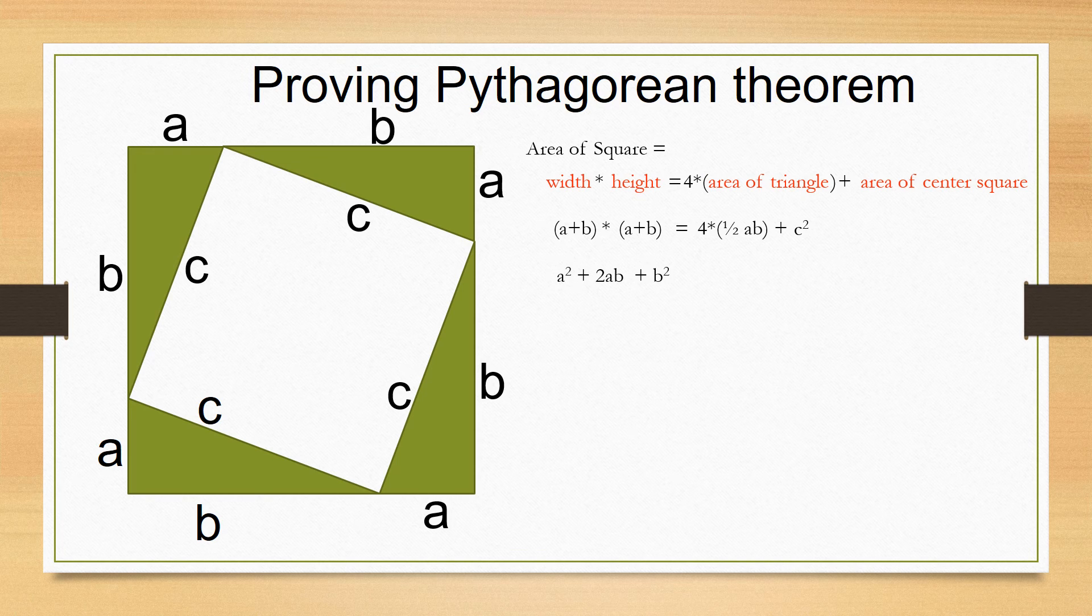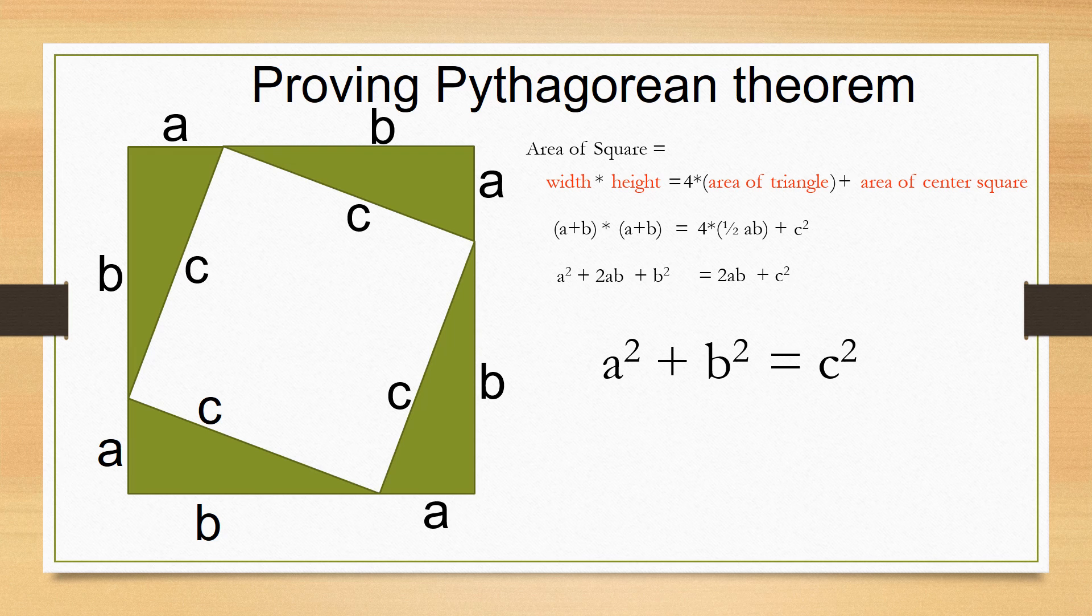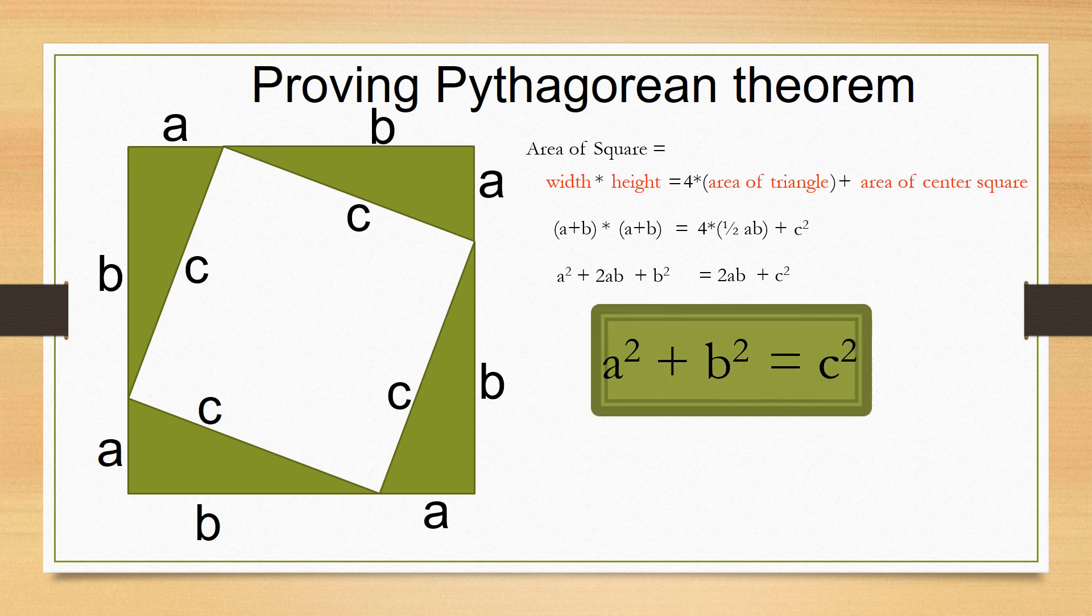Now we just simplify both sides of this equation. Subtract 2ab from both sides. And we are done.